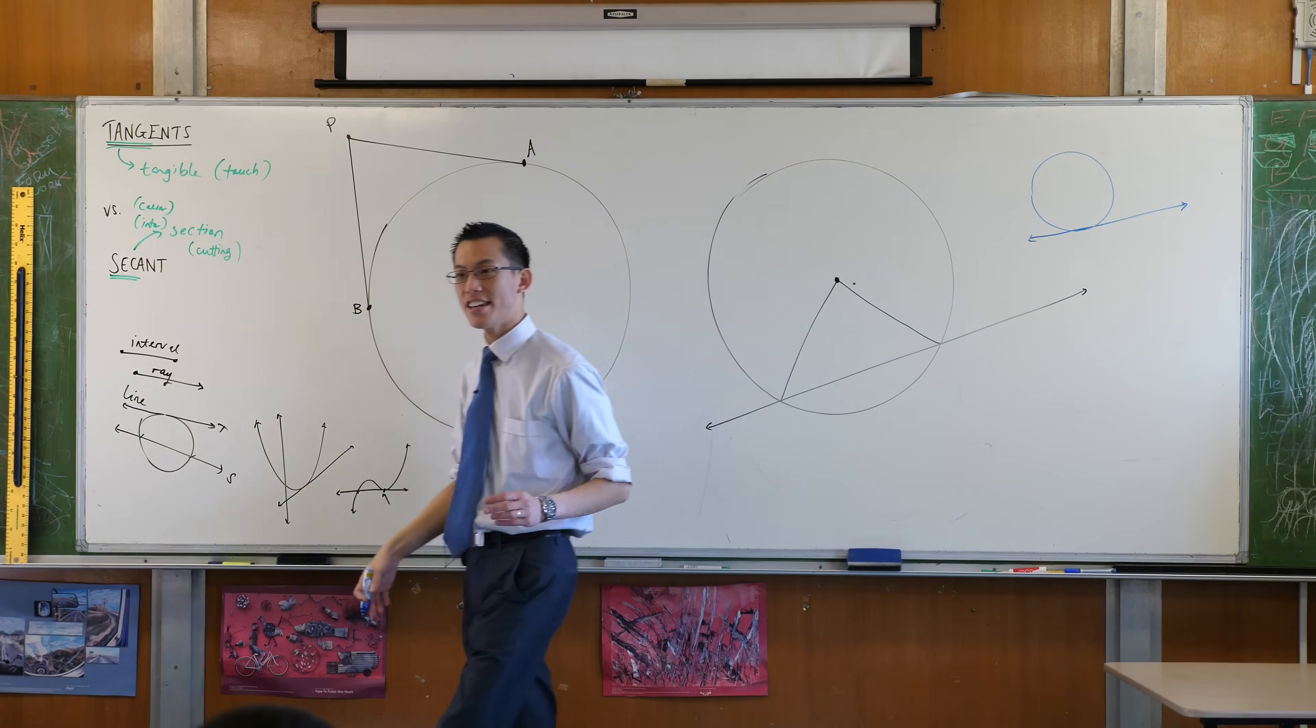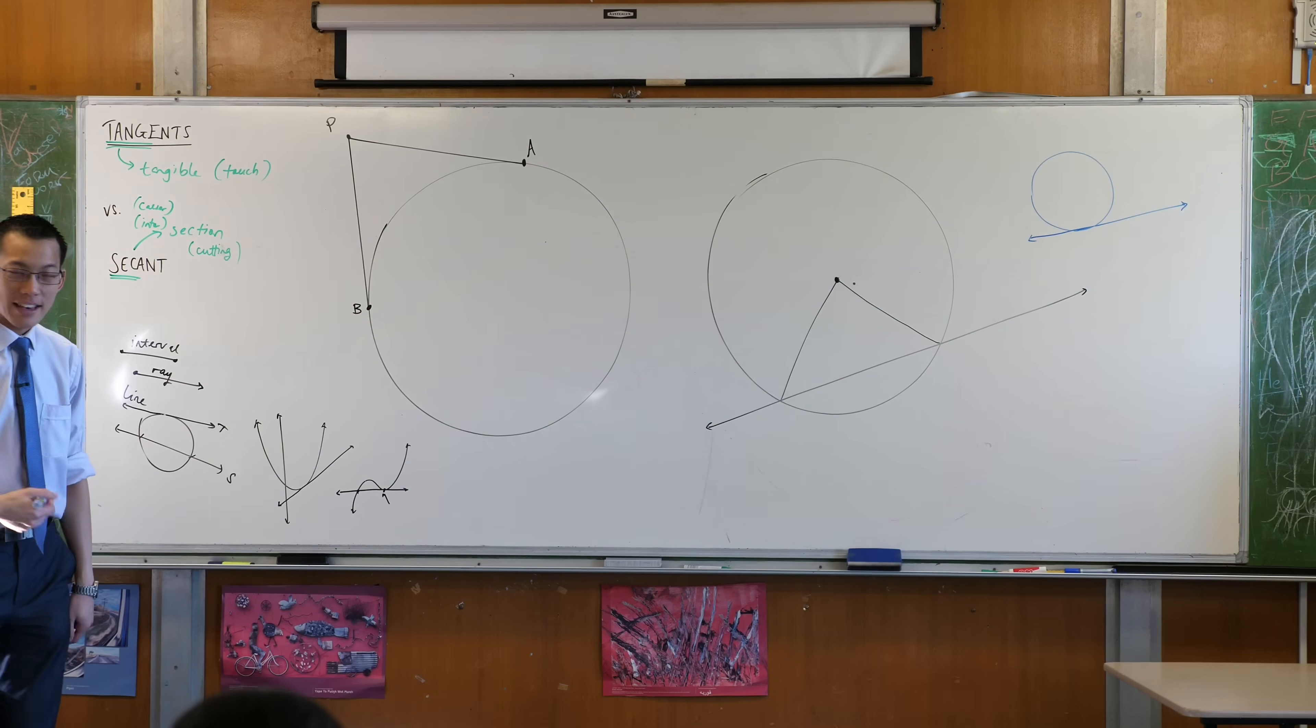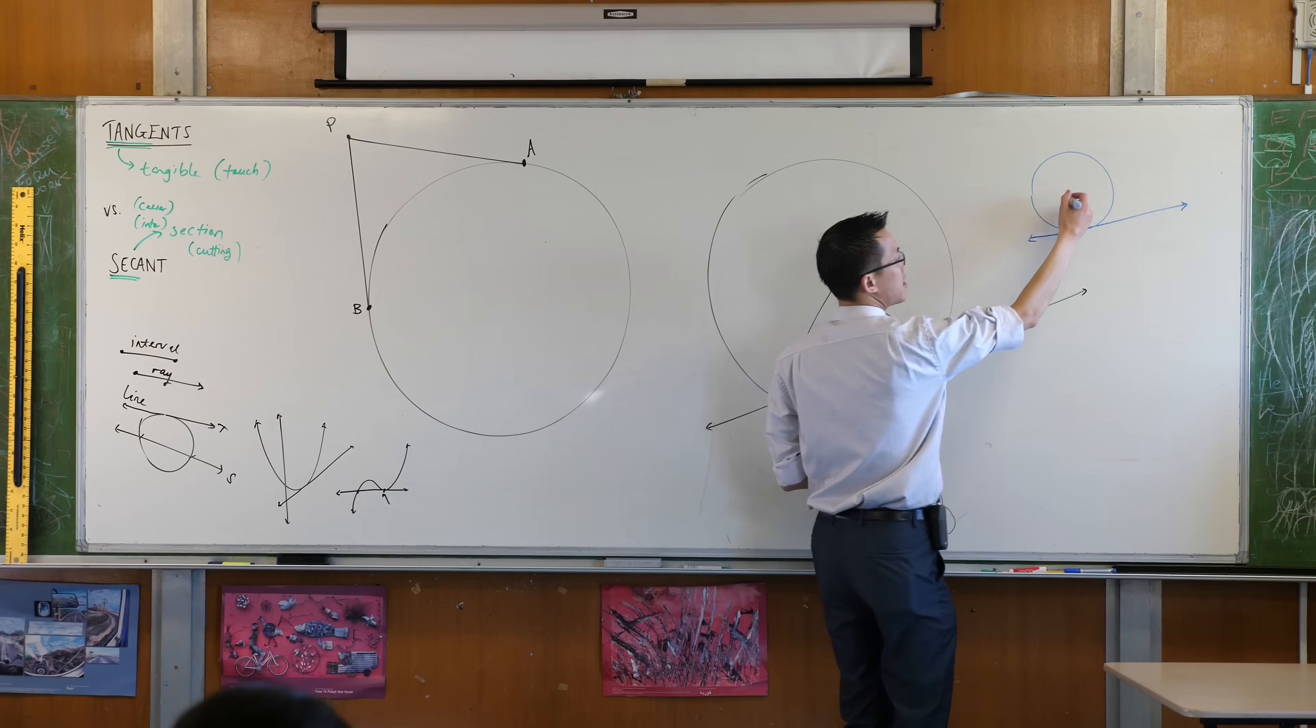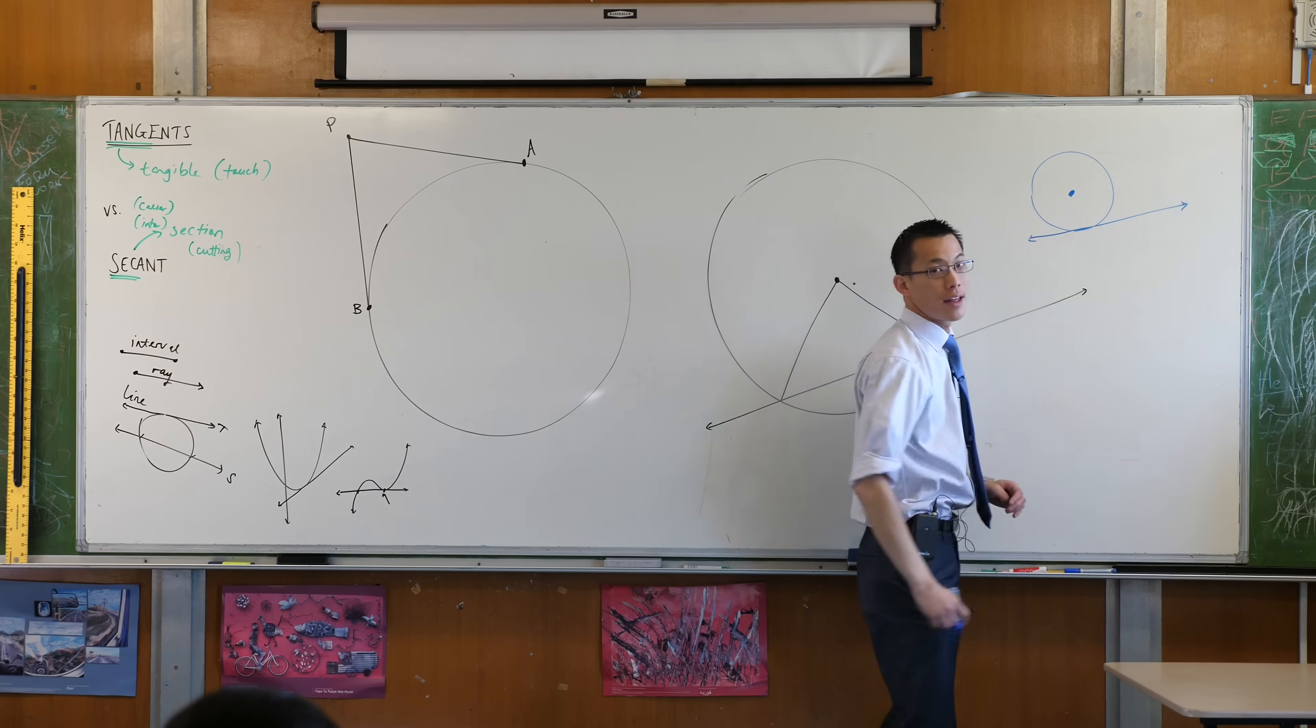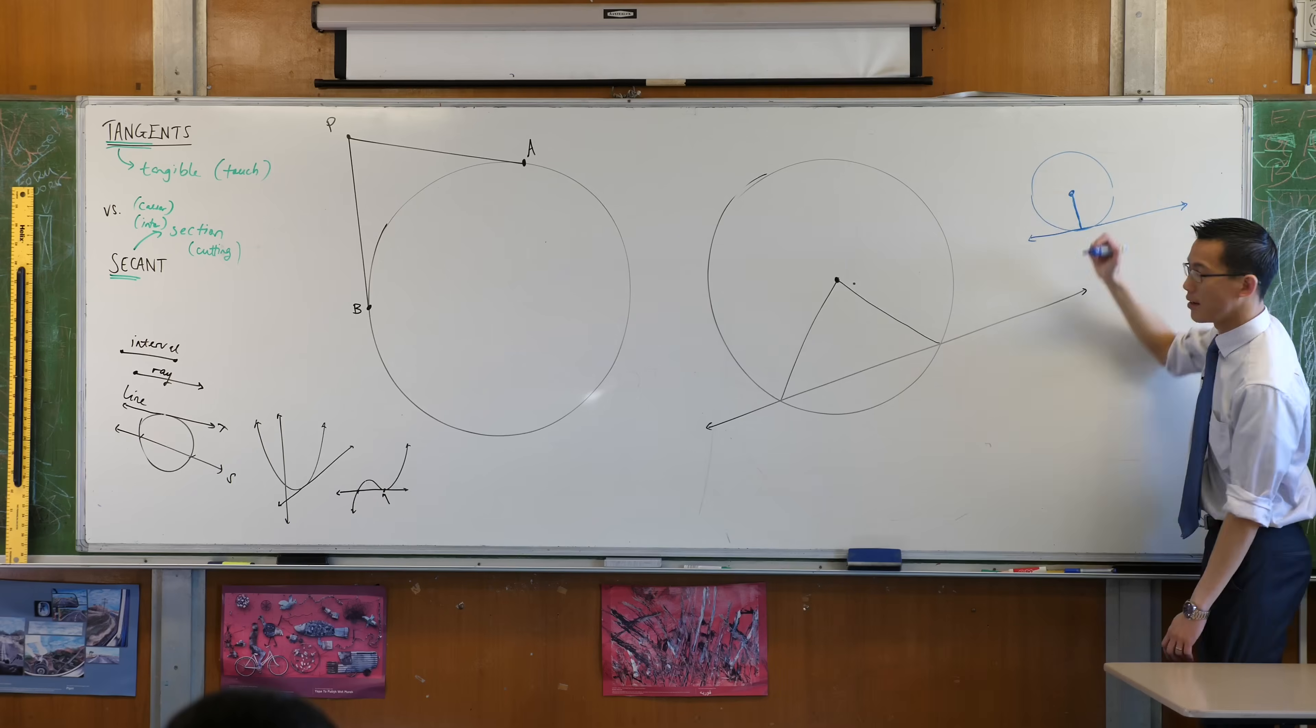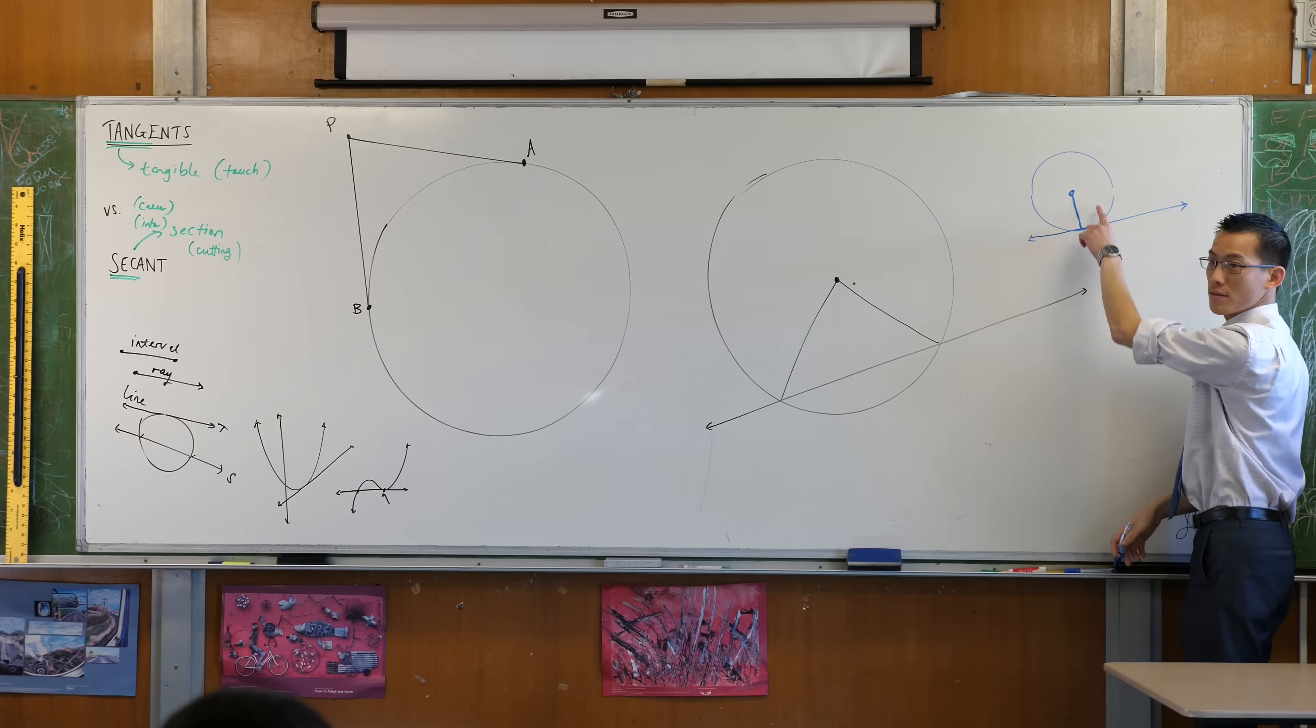Now the tangent intersects with the circle exactly once. What I'd like you to draw is the radius of the circle to that intersection point. So if the center is here, then the radius is going to come down to the tangent like so. Okay, radius, tangent.